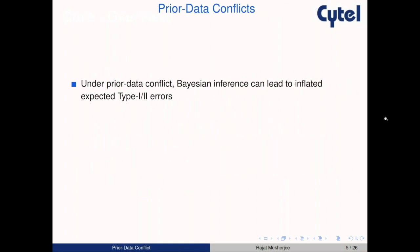Typical concerns include: what if there is a conflict in terms of the effect size per arm or differences between the two arms, or a mismatch in the distribution of the endpoint between historical and current trial? The next question is how much information from the historical data to borrow and how to control this level of borrowing. Prior data conflict is when the distribution of the effect size or endpoint of interest does not agree between the historical and current data. Under prior data conflict, Bayesian inference can lead to inflated expected type one and type two errors.